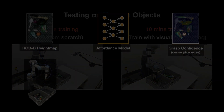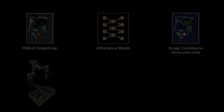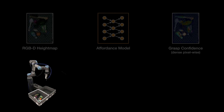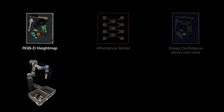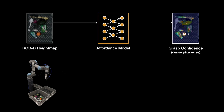In our work, we approach the manipulation problem by predicting affordance. Using a 3D camera, we capture RGBD images to generate a heightmap view of the scene and then feed it into an affordance model to get a pixel-wise confidence score for the success of a predefined manipulation skill. The manipulation skill is then executed at the location with the highest score.